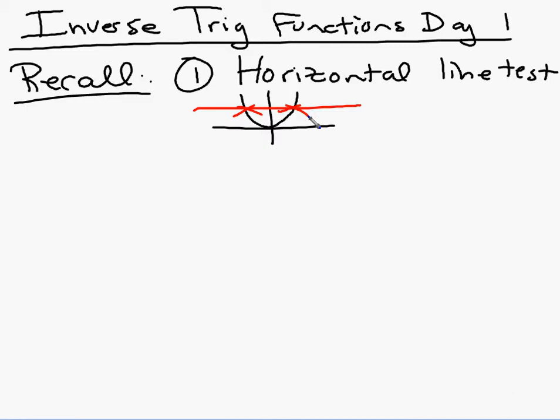Another way of saying a function has an inverse is saying the function is one-to-one. You need to get used to this terminology because of what's on your homework. Saying a function is one-to-one is saying that it has an inverse.